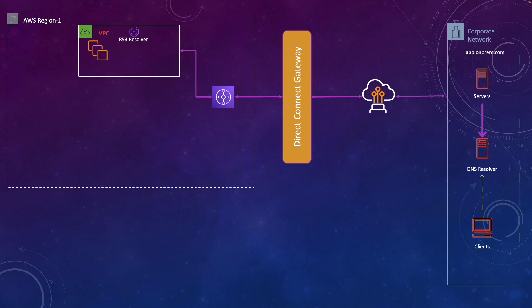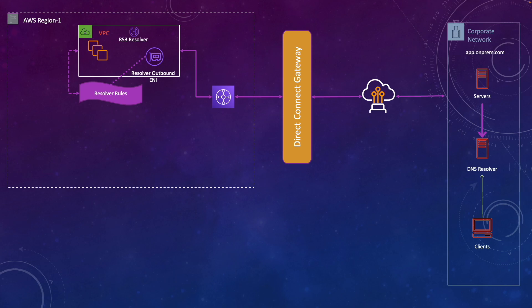Now let's talk about the outbound endpoint. Here I have my application running on-prem — app.onprem.com — and resources in my VPC need to resolve this DNS name. We create an outbound endpoint which drops an ENI in the VPC, and we create resolver rules associated with this outbound endpoint. The rule says that any request for app.onprem.com should use the on-prem DNS server to resolve it. Requests originating from the VPC go to the Route 53 resolver, which checks the rules, finds the on-prem DNS server IP address, and uses the outbound ENI to forward that request for resolution.